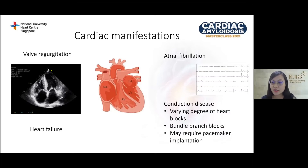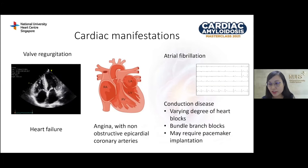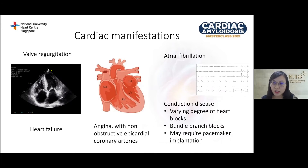The conduction system can also be affected, leading to varying degrees of heart blocks and bundle branch blocks. Some patients may require pacemaker implantation. Some patients with cardiac amyloidosis can present with angina due to deposition of amyloid fibrils in the intramural epicardial arteries, and coronary angiogram will often reveal non-obstructive epicardial coronary arteries.